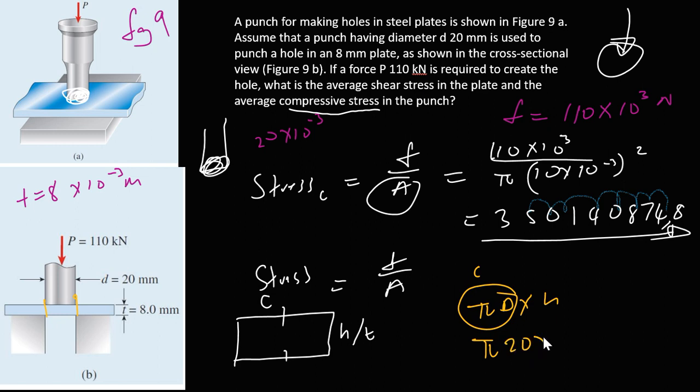Let me just plug it here because we have everything. Diameter was given to be 20 times 10 negative 3, and the height is the thickness, it's just given to be 8 times 10 negative 3, again because we all hate millimeters.